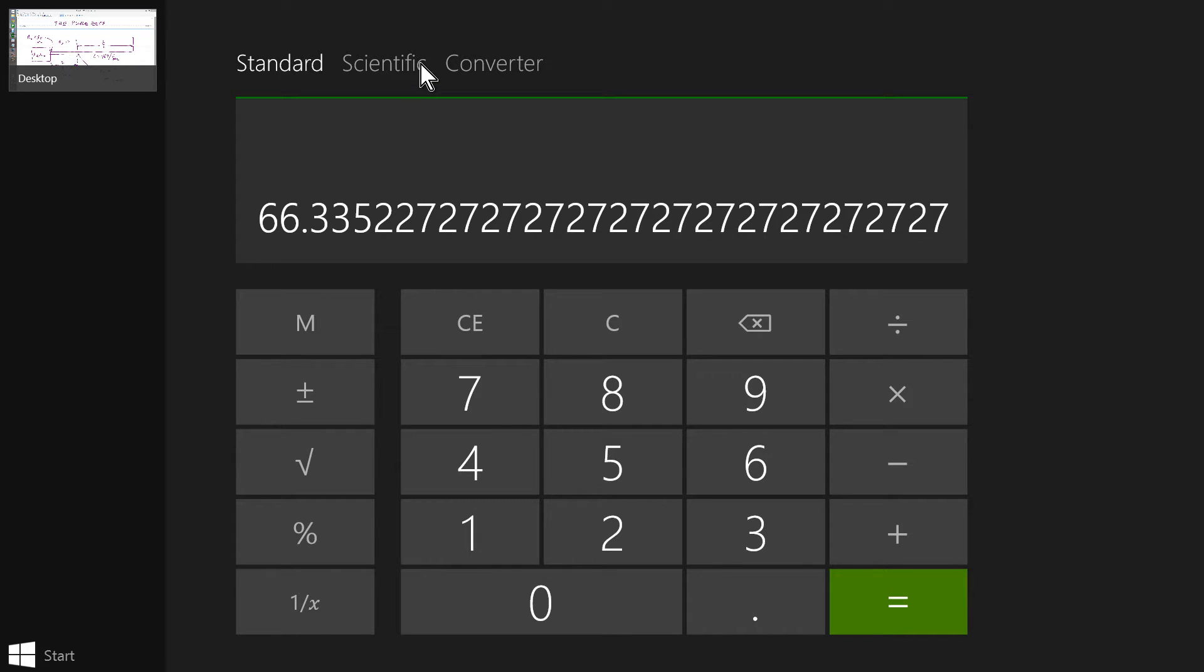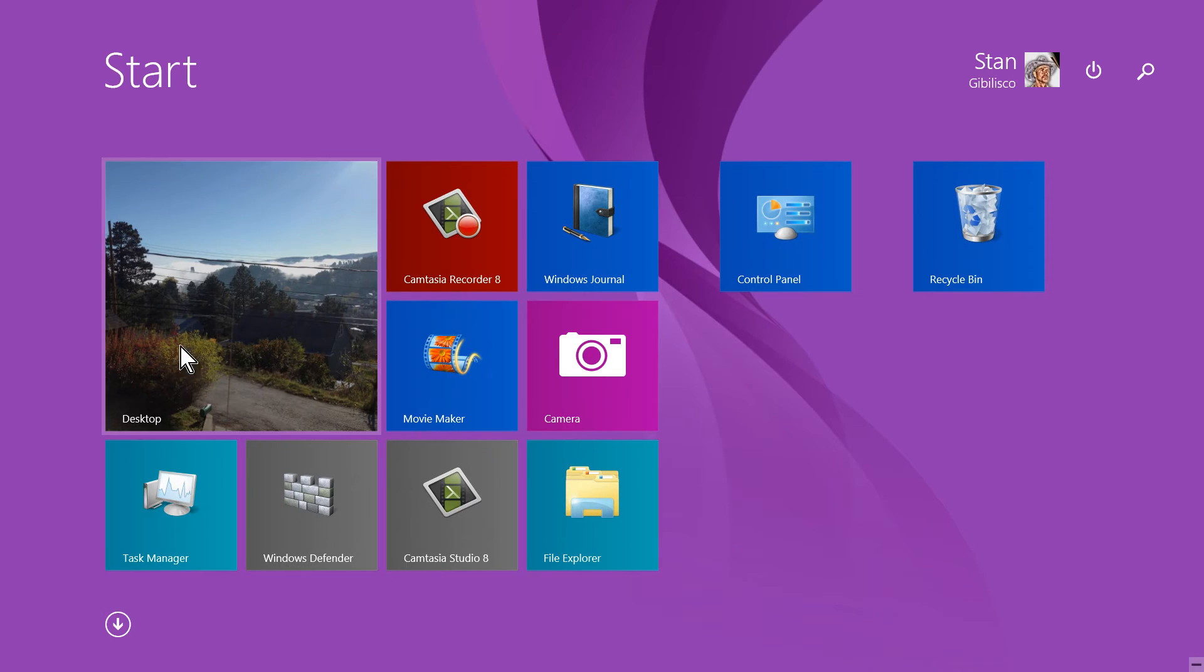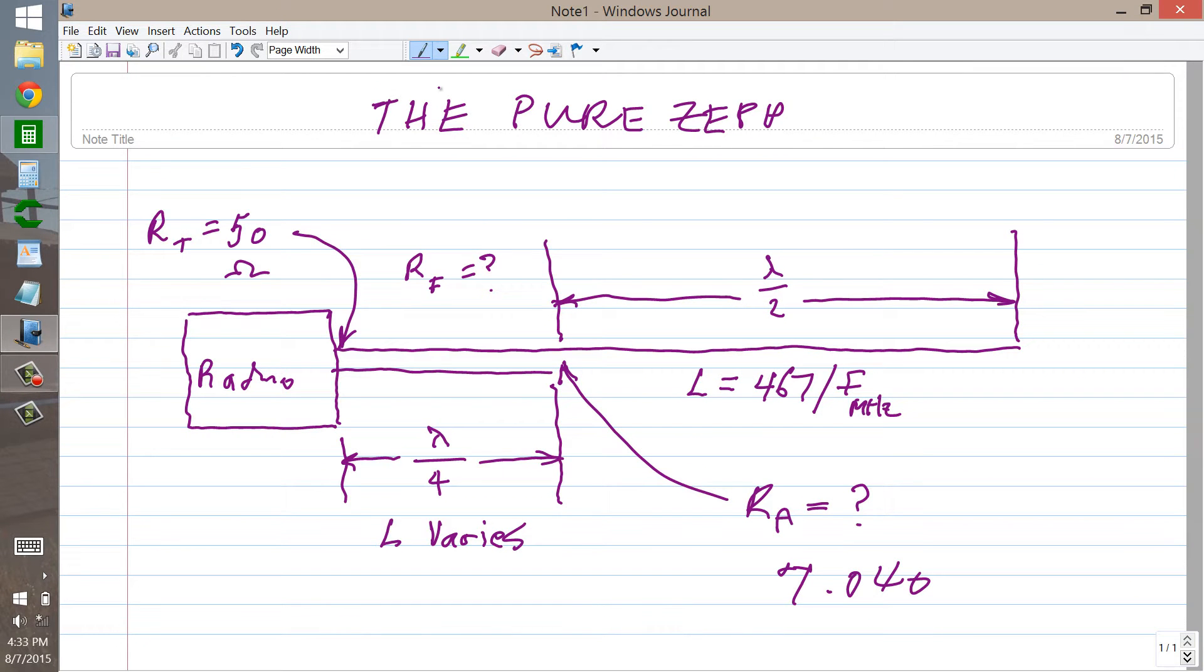Now, how on earth do I get rid of this full screen calculator? I didn't want the calculator to be full screen. Okay, well, we're back to our action here. The pure ZEP, 66 feet 4 inches.